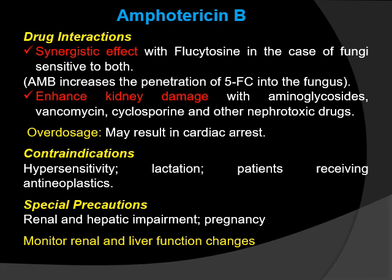Drug interactions of Amphotericin B: synergistic effect with flucytosine in the case of fungi sensitive to both — Amphotericin B increases the penetration of flucytosine into the fungus. Amphotericin B enhances kidney damage with aminoglycosides, vancomycin, cyclosporine, and other nephrotoxic drugs. Overdoses of Amphotericin B may result in cardiac arrest. Contraindications are hypersensitivity, lactation, and patients receiving antineoplastics. Special precautions are renal and hepatic impairment and pregnancy.